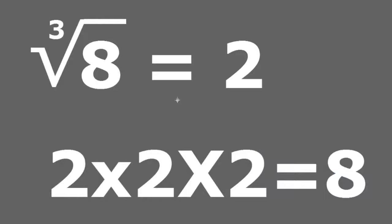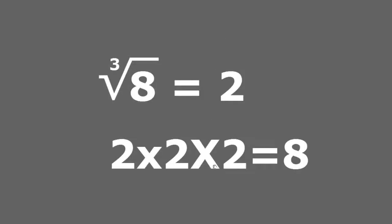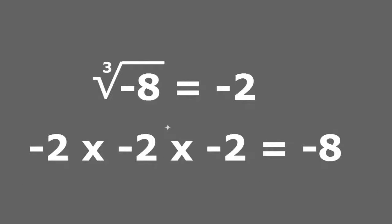So the cube root of the number 8 is the number 2. Now, here I have the cube root of the number negative 8, and the cube root of negative 8 is the number negative 2. Remember, when we were dealing with square roots, which are roots of grade 2, if you have the square root of a negative number, that equals an imaginary number. But that does not happen when you have a cube root of grade 3. The reason is that I can find a number that multiplied by itself a total of 3 times will equal negative 8. That number is negative 2.